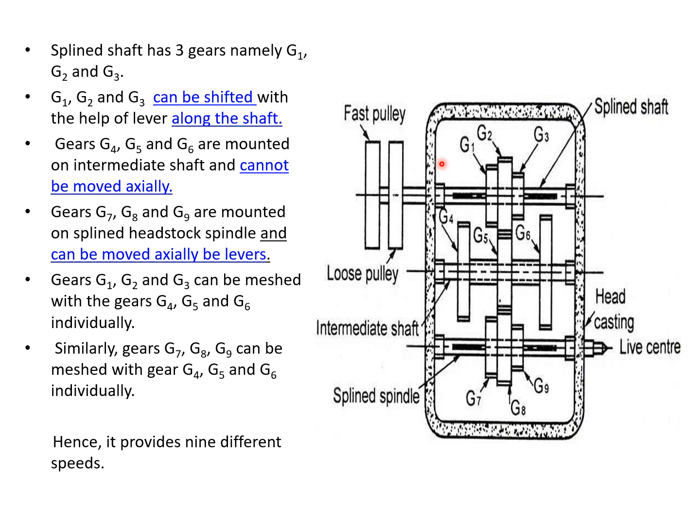In this all-geared headstock mechanism, the first shaft is called the splined shaft. This splined shaft has three gears, namely G1, G2, and G3. G1, G2, and G3 can be shifted with the help of a lever along the shaft. That is, these three gears can be moved in axial direction on this splined shaft.